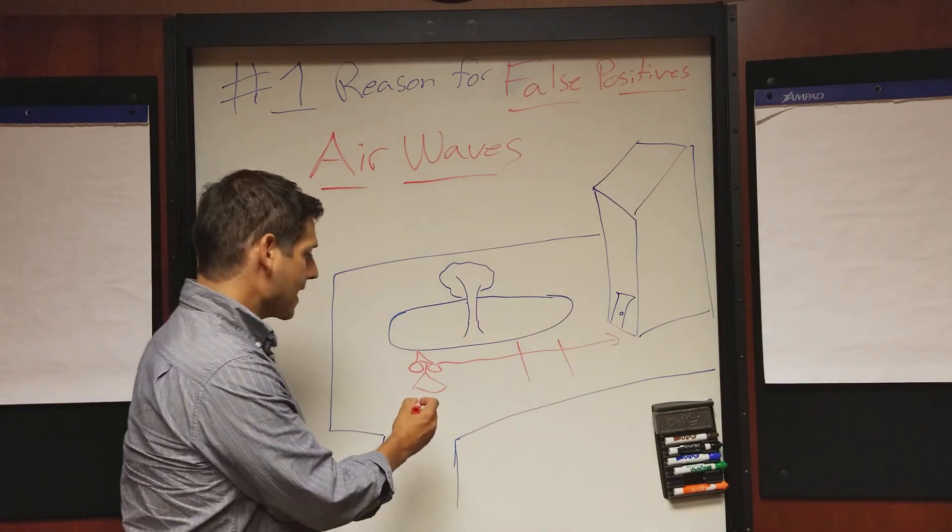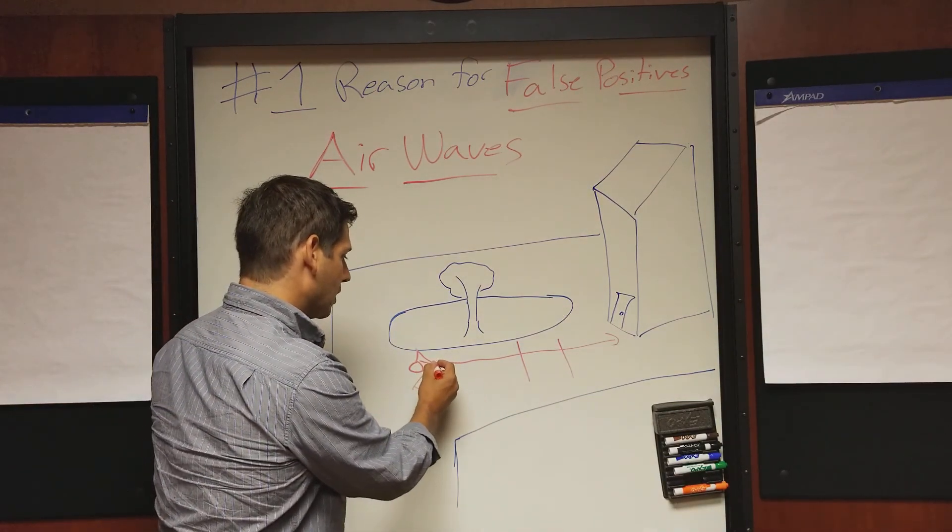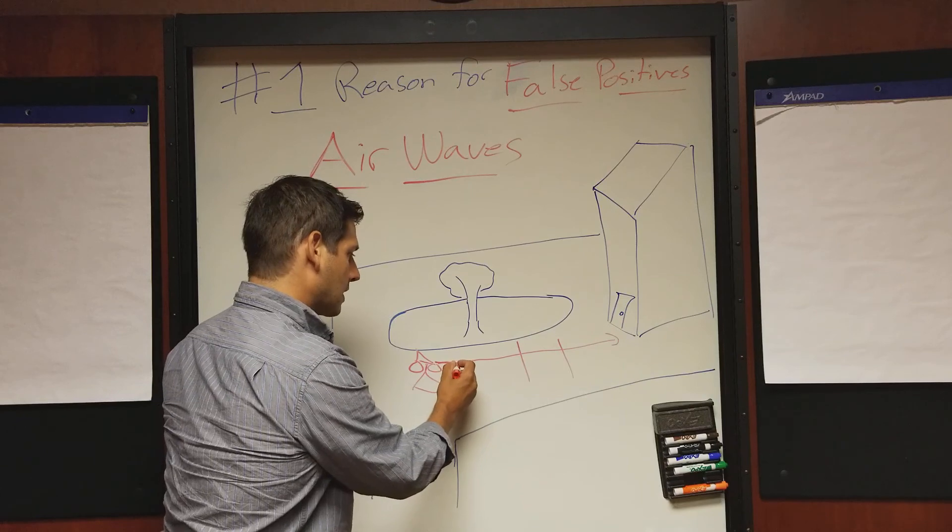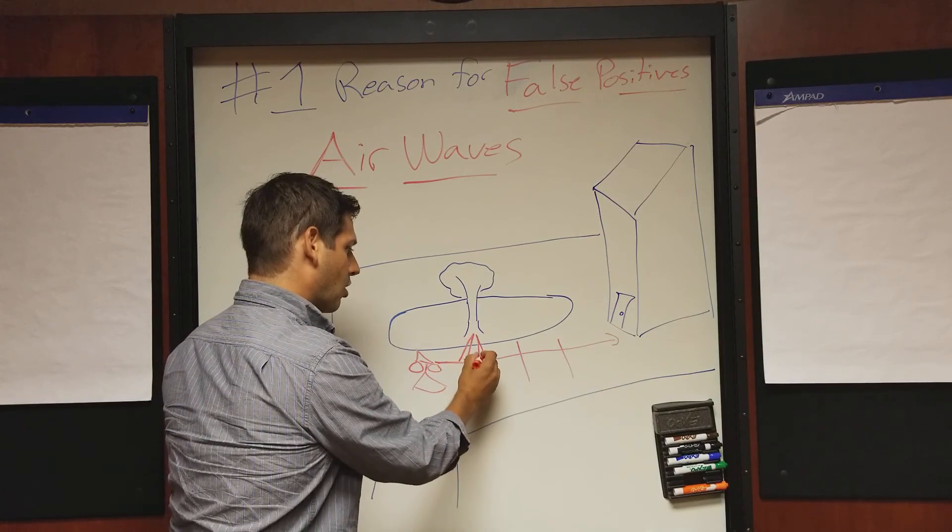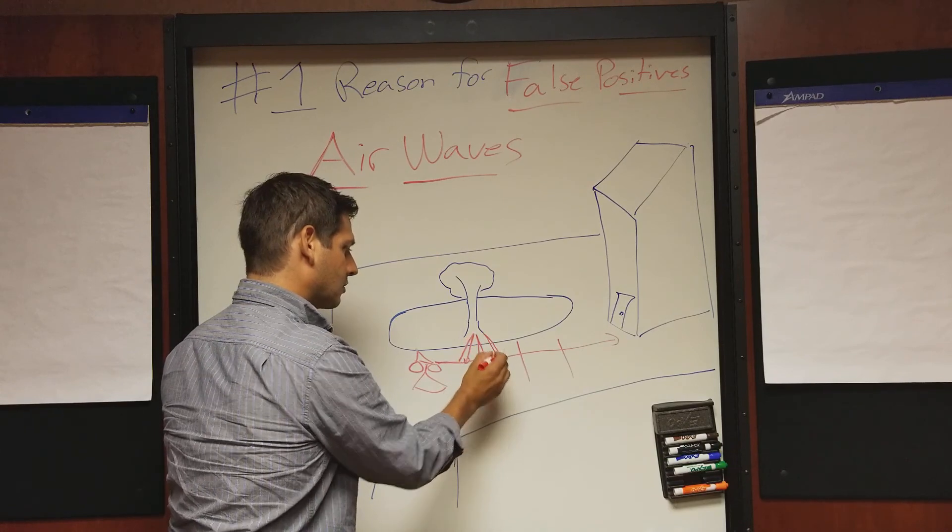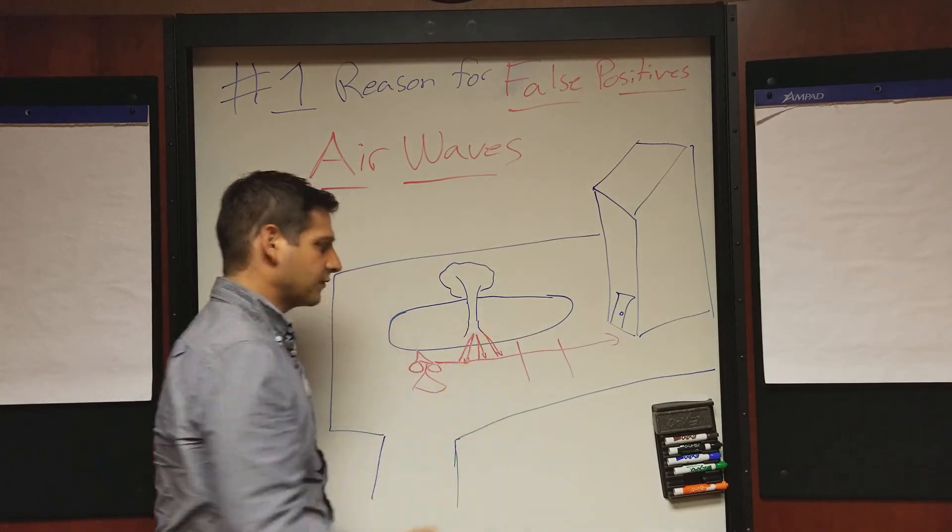What happens is, as you're moving along this direction, you get a bounce off of the signal off of this tree as well. So it bounces off the tree.